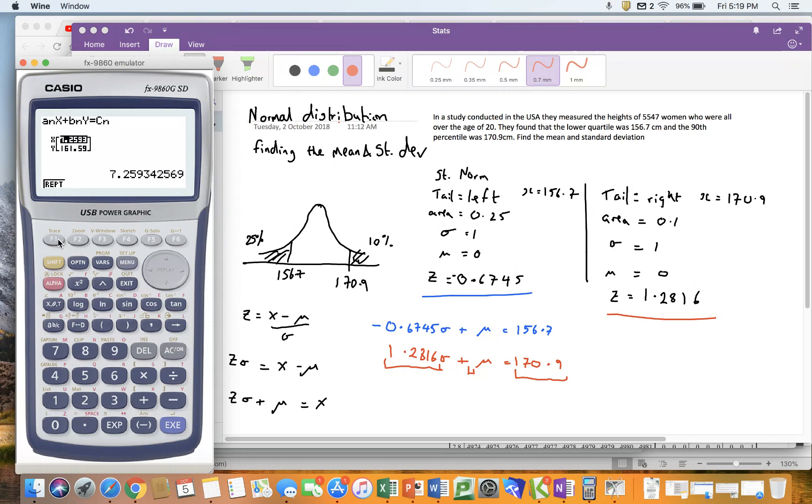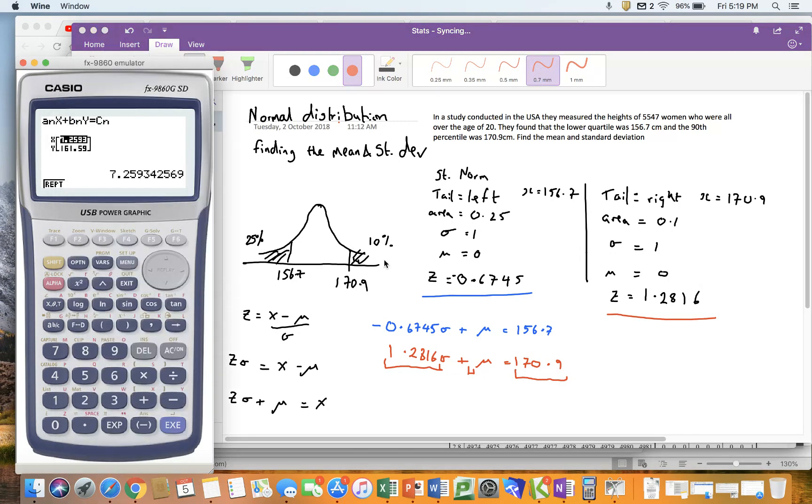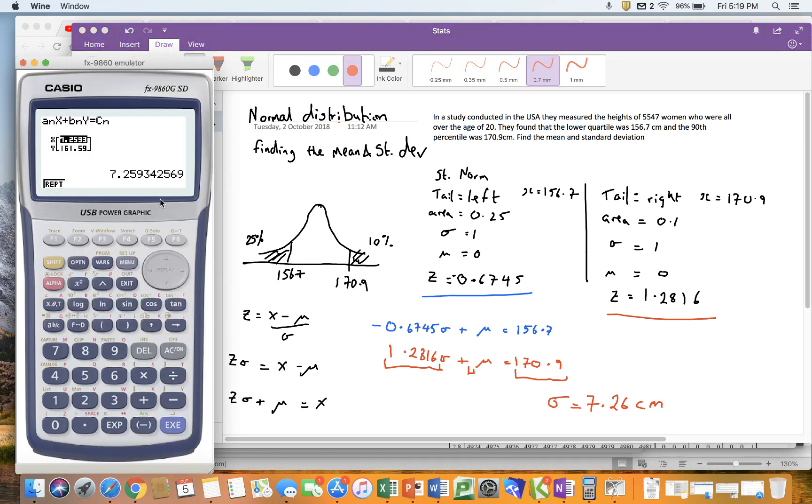The first number it gives me is my standard deviation, because that's the first thing I put in. So my standard deviation is 7.26 centimeters, and my mean is 161.6.